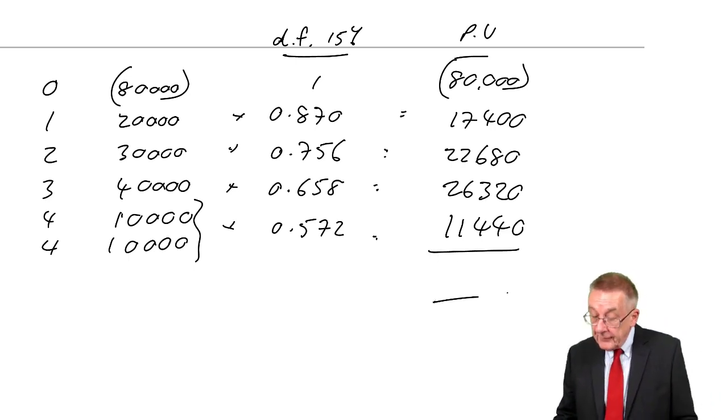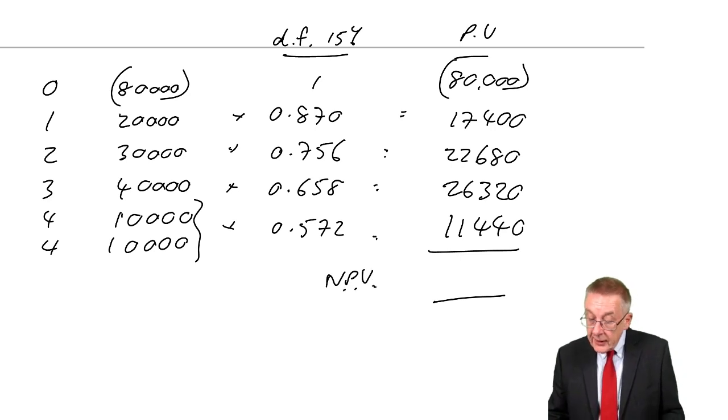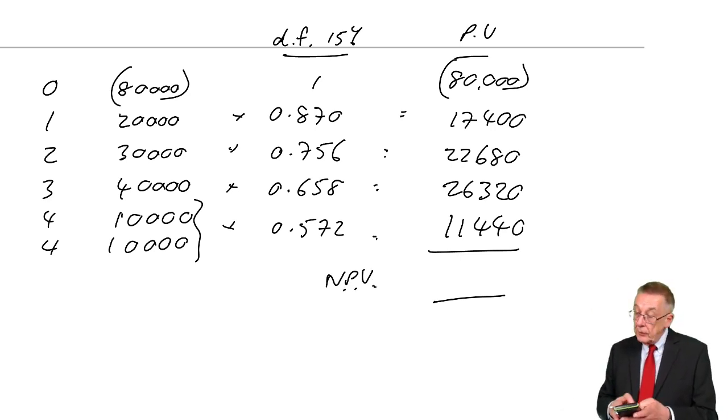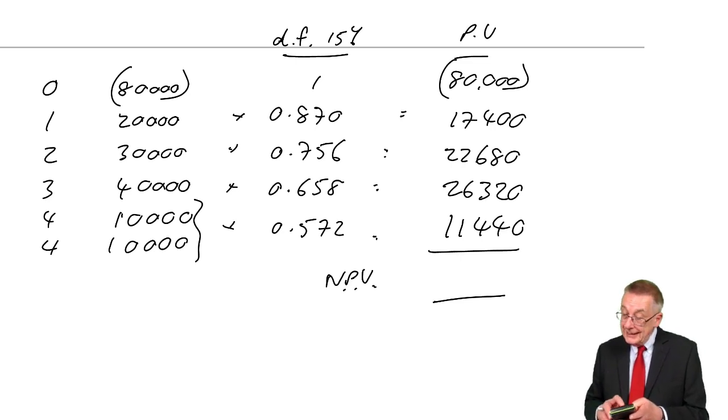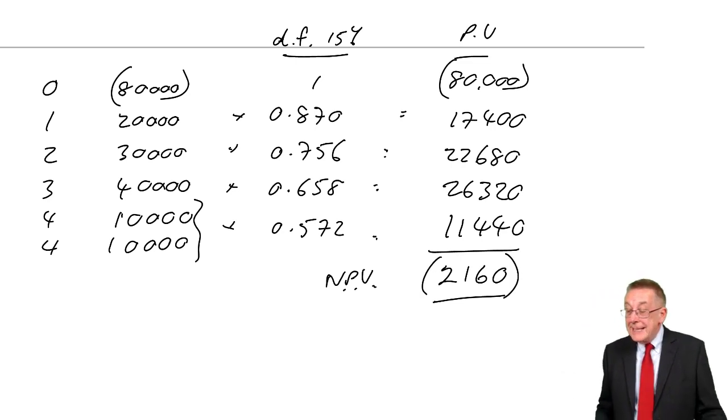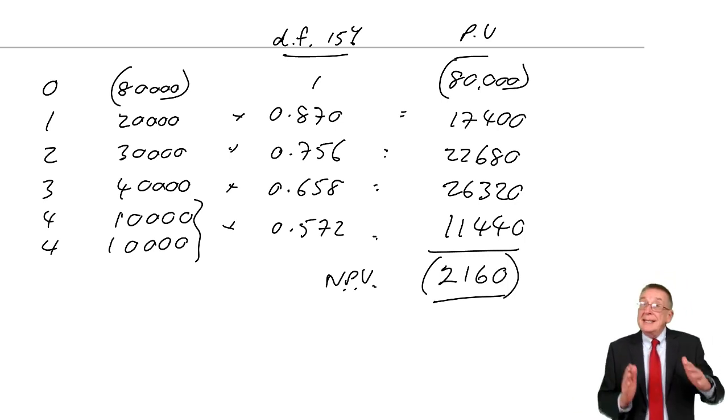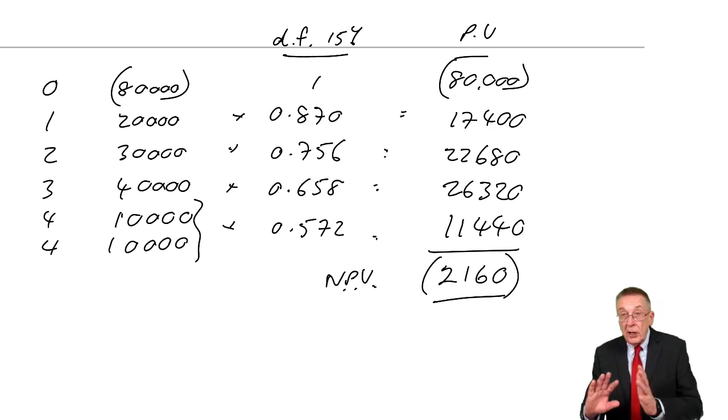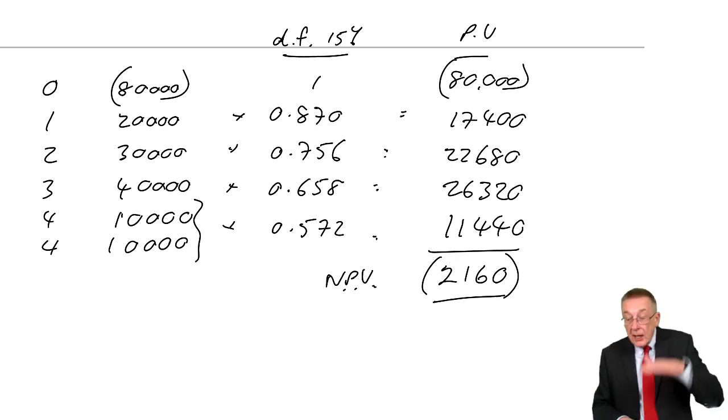So with cost of capital 15%, the net present value, well the inflows of 17,400 plus 22,680, 26,320, 11,440 minus the outflow of 80,000. Well I hope you did have a go yourself, but you should have got a negative NPV of 2,160. As you'd expect, it is lower. Higher cost of capital, higher cost of money, lower NPV.